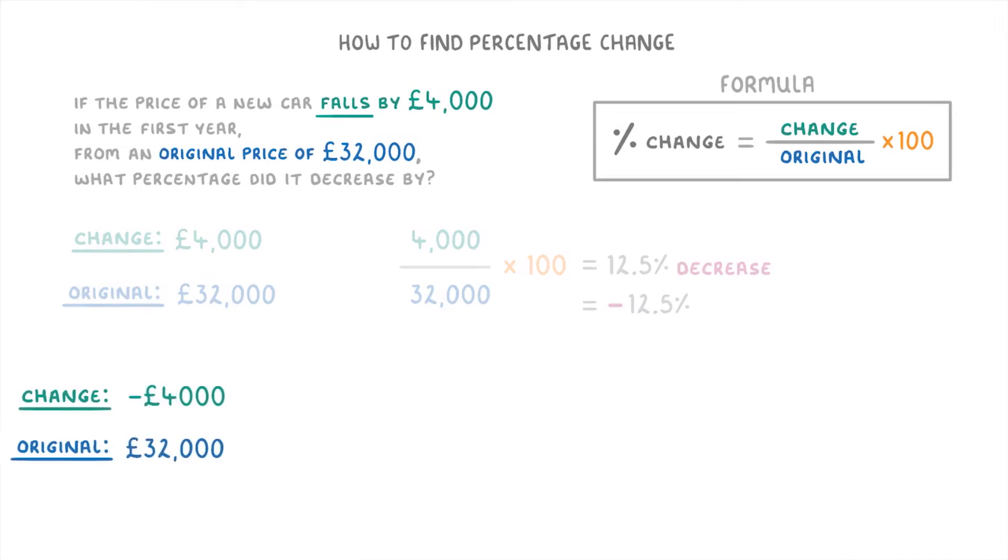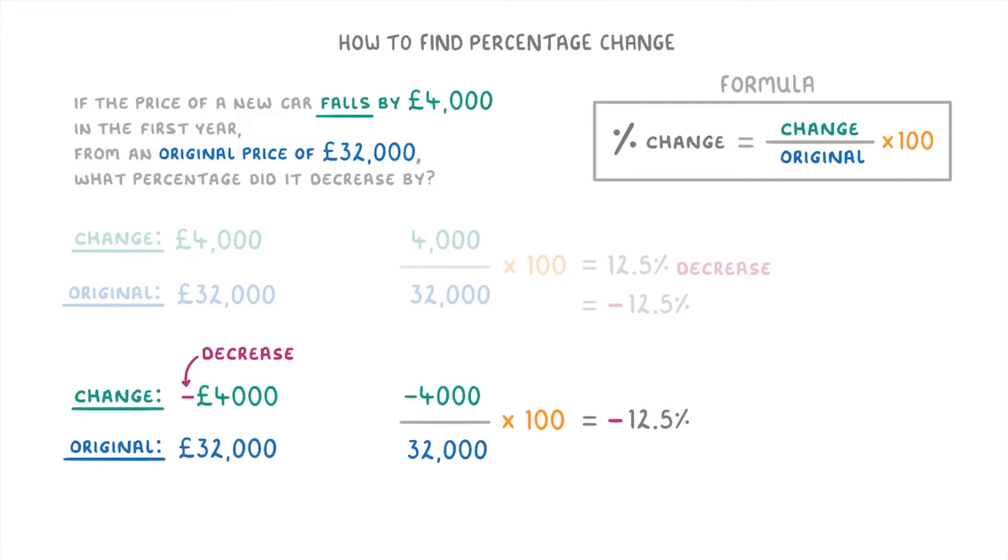Alternatively, we could have put our change as minus £4,000 to start with, to show that it's a decrease of £4,000. And if we had put that in our calculation, then we would have got minus 12.5% straight away.